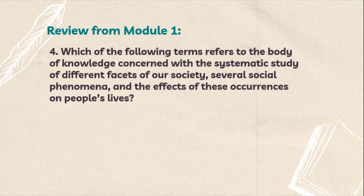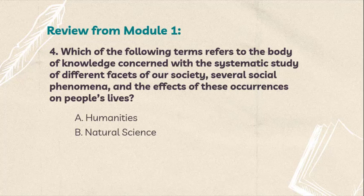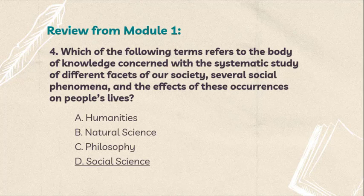Question number 4: Which of the following terms refers to the body of knowledge concerned with the systematic study of different facets of our society, several social phenomena, and the effects of these occurrences on people's lives? A. Humanities. B. Natural Science. C. Philosophy. D. Social Science. The correct answer is D. Social Science.